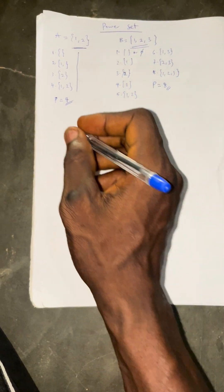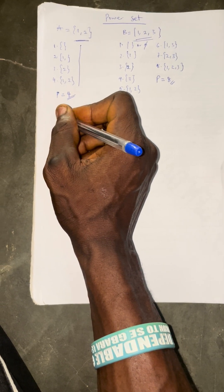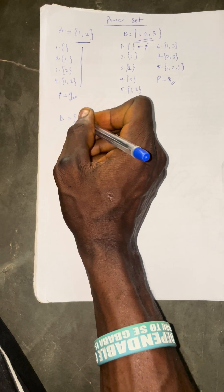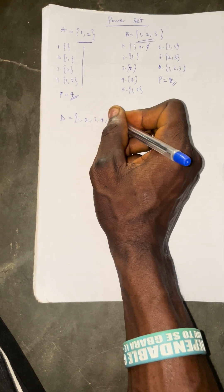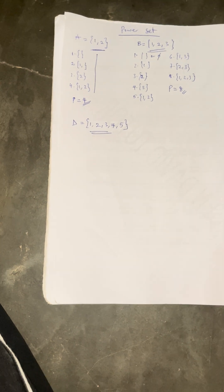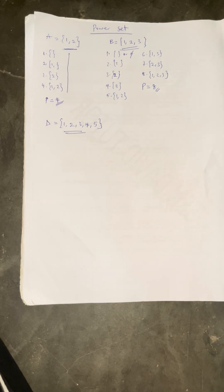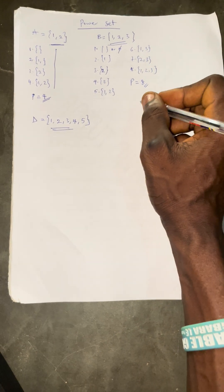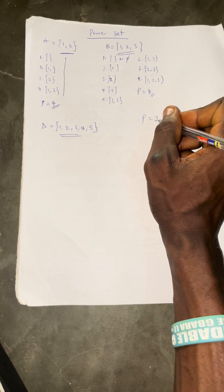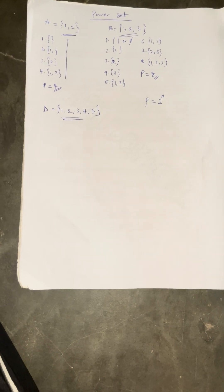Now the next one: if you are given set D to be {1, 2, 3, 4, 5}, I'm not going to go through the same process of listing, because if you are given a CBT question you will not have time to list all the subsets. We have a shortcut method that says the power set equals 2 raised to the power n, where n means the number of elements — that is, the cardinality of the set.